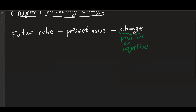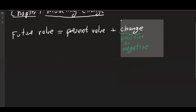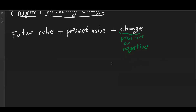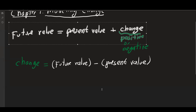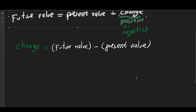Looking at this equation, we can solve for change: change equals future value minus the present value. The idea present throughout this chapter is that future value is always present value plus change. Now, there is a difference between the kinds of changes that we have.